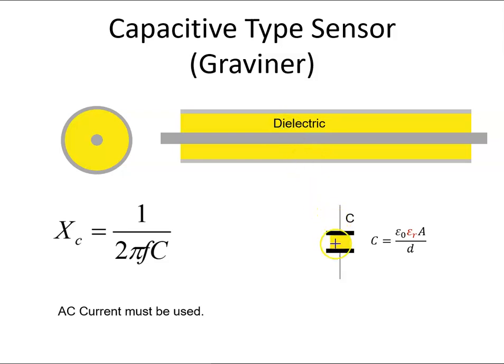If we consider a capacitor, a capacitor has a dielectric and it's surrounded by two plates. The plates have a cross-sectional area of A, and the distance between the plates is d.